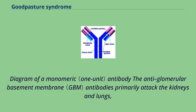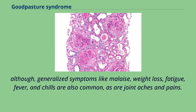The anti-glomerular basement membrane antibodies primarily attack the kidneys and lungs. Although generalized symptoms like malaise, weight loss, fatigue, fever, and chills are also common, as are joint aches and pains.